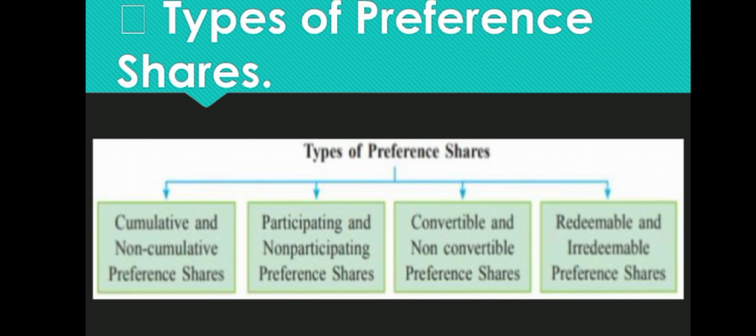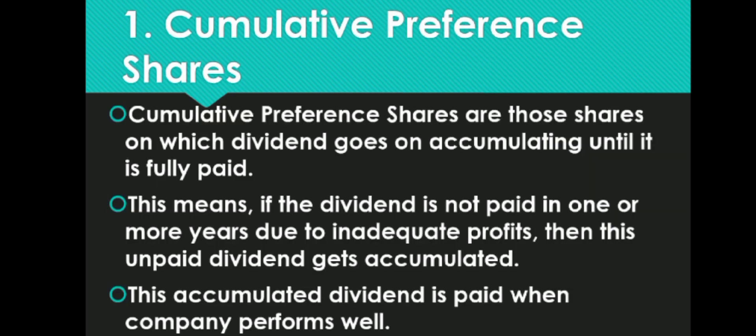Types of preference shares: There are four categories with eight total types of preference shares. They are divided into pairs: cumulative and non-cumulative, participating and non-participating, convertible and non-convertible, and redeemable and irredeemable preference shares.